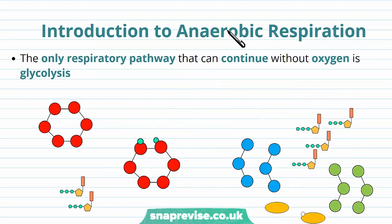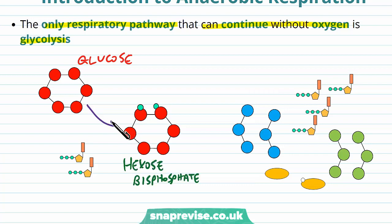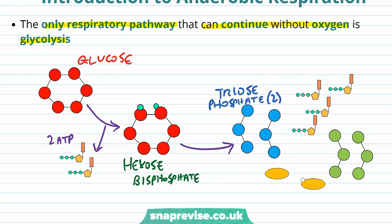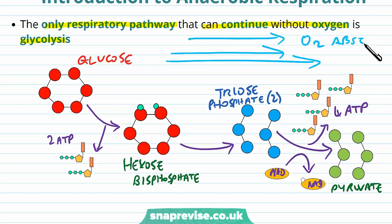So how do we get around this? The only respiratory pathway that can continue when there's no oxygen is glycolysis, the first step in respiration. In glycolysis, a molecule of glucose is turned into hexose bisphosphate, producing two ATP molecules. The hexose bisphosphate is split into two triose phosphate molecules, and their conversion to two molecules of pyruvate makes four ATP molecules. Crucially, reduced NAD is also made in this process.